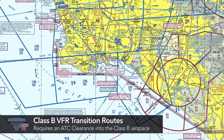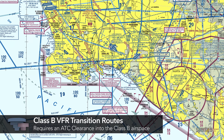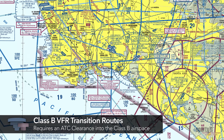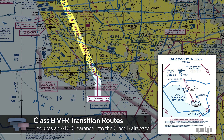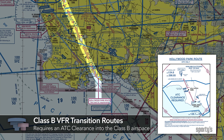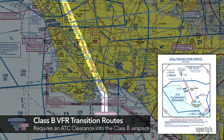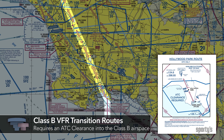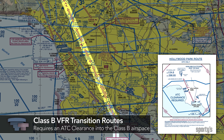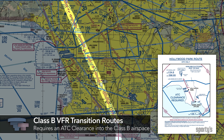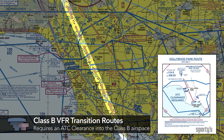Class B airspace transition routes are similar, except that an ATC clearance is required. They are specific flight courses depicted on Terminal Area Charts for transiting the Class B airspace. Unlike the former published VFR routes, transition routes include specific ATC assigned altitudes.